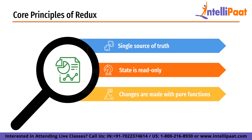Finally, changes are made with pure functions. Reducers are pure functions that take the current state and an action as an input and return a new state as an output. They are responsible for updating the state in response to the actions that have been dispatched. Because reducers are pure functions, they are predictable and have no side effects, which makes it easier to reason about how the state is being updated. By enforcing the use of pure functions, Redux provides a clear and consistent way to manage the application state.